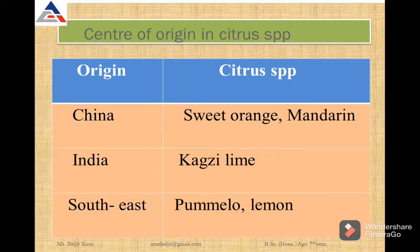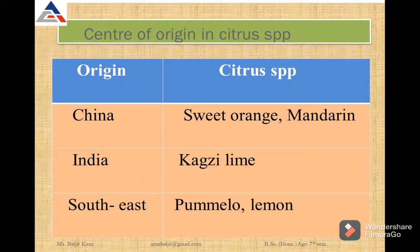Let us talk about the center of origin of citrus species. There are different citrus species like sweet oranges, mandarins, limes, and lemon, and different species originated from different areas. Sweet orange and mandarin are originated from China. Kacchi lime is from India, and pomelo, lemon, and many other varieties of citrus are originated from Southeast Asia.